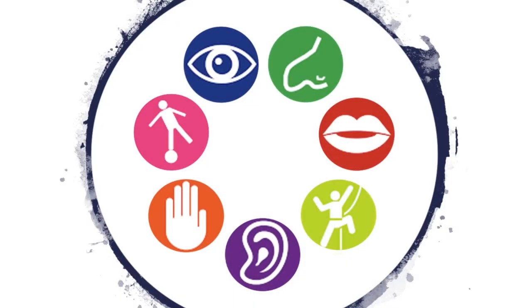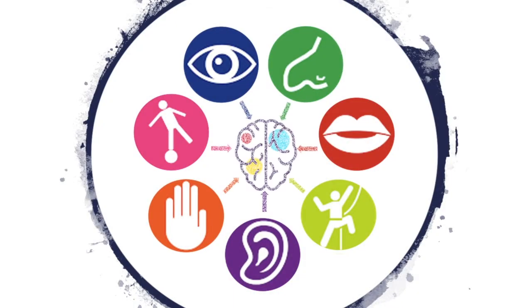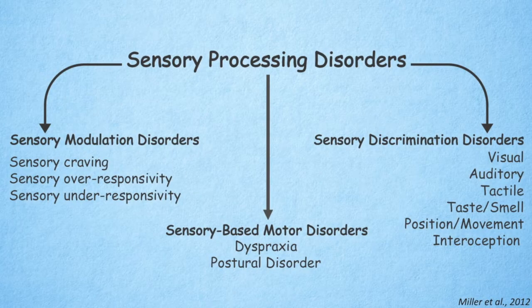Sensory processing is the perception, organization, and interpretation of sensory information in the nervous system. Being able to integrate this sensory input in the brain is necessary for interacting with the world around us. Sensory processing disorders occur when sensory signals are undetected or disorganized, resulting in atypical responses.